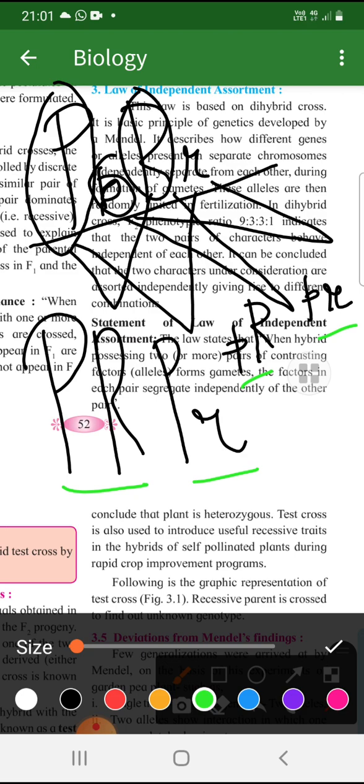So, these are the gametes. So, gamete formation mein kaise yeh ek allele, dusra allele ke saath combine ho raha hai. It is the chromosome. Allele ka matlab hi kya hai? This is one chromosome. This is second chromosome. Toh, chromosome ke andar there is linking. That is why they are going together. These are going to be more clear to you when you do the 4-5 chapter. Then, it will be more clear. But right now,